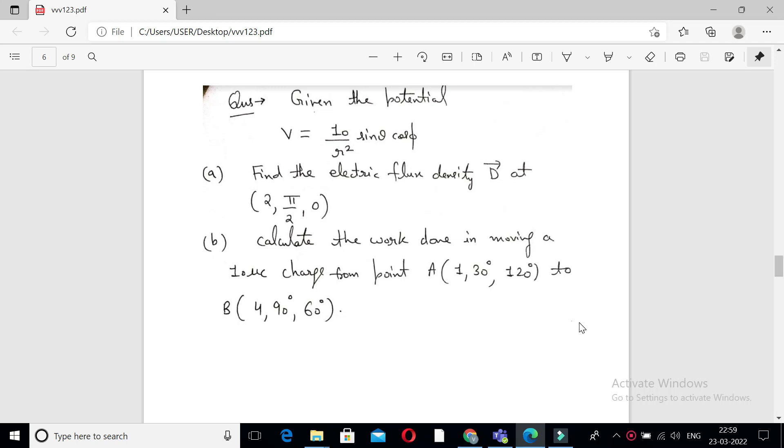In this lecture I am going to discuss numerical problems based on electric potential. Given the potential V equals 10 over R squared sine theta cosine phi, find the electric flux density D at the given coordinate 2, pi by 2, and 0. Calculate the work done in moving a 10 microcoulomb charge from point A to B.